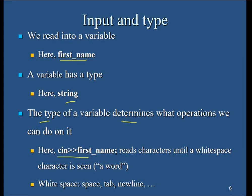For the string 'first name', cin reads characters until a white space character is seen. It accepts input from the keyboard up until the user types a space, presses Enter, or hits Tab — those are white spaces. White spaces include spaces between words, new lines, page breaks, and column breaks.